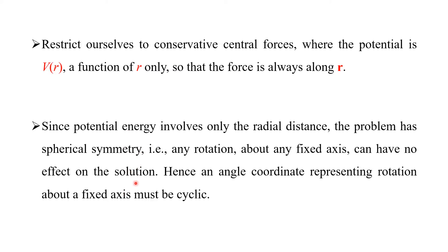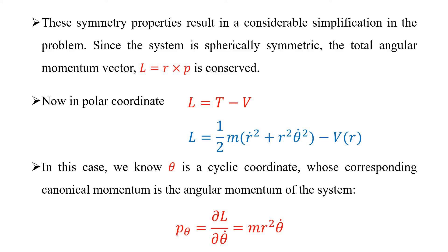Since the system is spherically symmetric, the angle theta must be a cyclic coordinate. A cyclic coordinate is an ignorable coordinate — that is, we can ignore the theta term in the coordinate system. The angular momentum is equal to R cross P, and this is the conserved quantity.